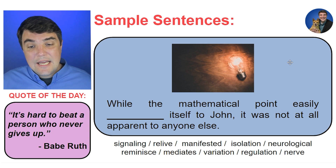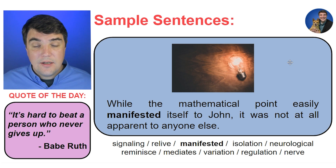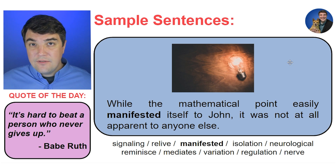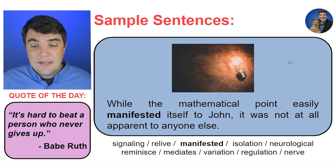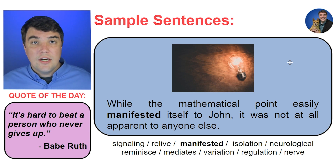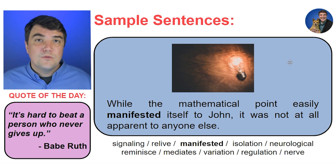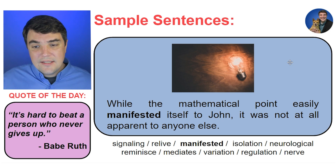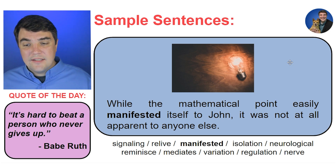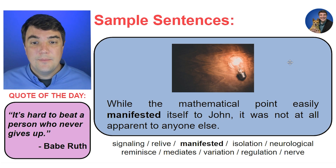While the mathematical point easily manifested itself to John, it was not at all apparent to anyone else. Manifest is a very high level word, but it is important for the exam. Basically in this sentence, the idea has presented itself to John — it has come to him and manifested in front of him. So it's almost like 'appear,' but slightly different. The idea has manifested itself to John: it has come to him and become a part of him.